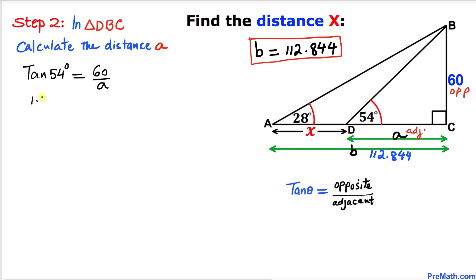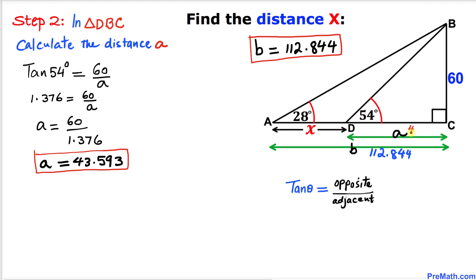We know that tangent of 54 degrees is 1.376 equals 60 divided by a. Since we want to solve for a, we can switch these values, so a equals 60 divided by 1.376. If we divide, our a value is approximately 43.593. Thus, our a value turns out to be 43.593.